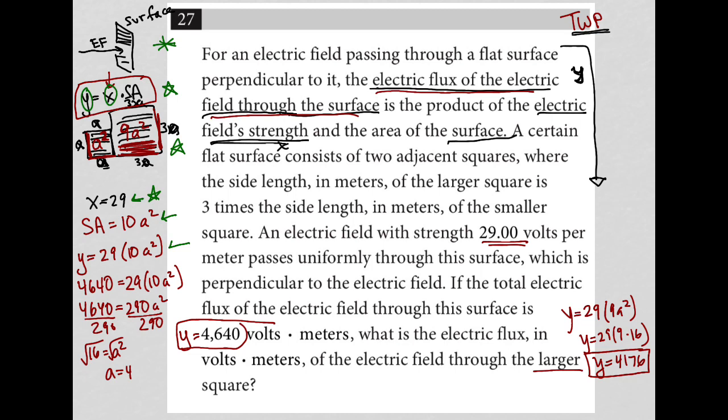So then we put that into the equation that we had earlier, continue to solve that down to figuring out each side length of the square. And then the question goes and asks us another question, which is now we don't know what Y is, but we want to solve for Y as if it were, as if we were only focused on the large square surface, right? Only the 9A squared instead of the 10A squared. So that's our process to get to our answer. And the answer is 4176.